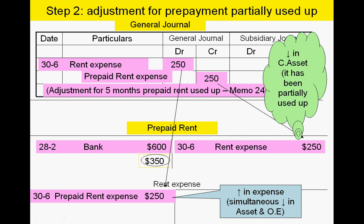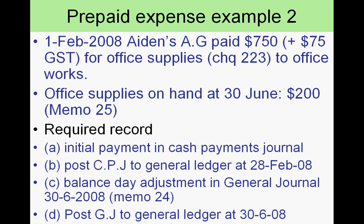The reason we have an expense is because we have an outflow of economic benefit in the form of a decrease in our assets — namely prepaid rent — and a simultaneous decrease in owner's equity, thus satisfying the definition of an expense.